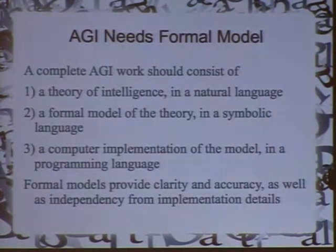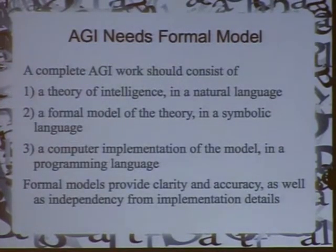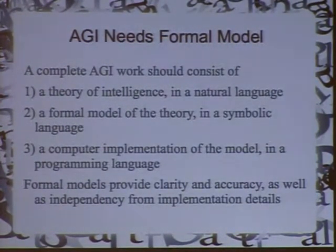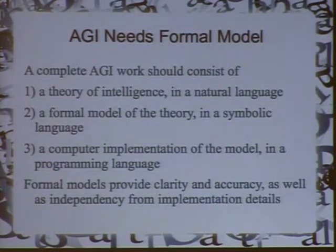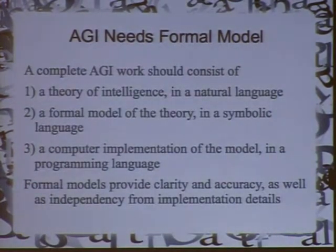First, I completely agree that for AGI, the use of a formal model is completely necessary and very important. In my opinion, a complete AGI work should consist of three layers of work, or three levels. You need a theory of intelligence, typically represented in some kind of natural language — that's basically your idea. Then you have a formal model which formalizes the ideas into some kind of model with more accuracy. And then finally, you have a computer implementation. I think the middle layer is completely necessary to provide a connection between the top one and the bottom one.